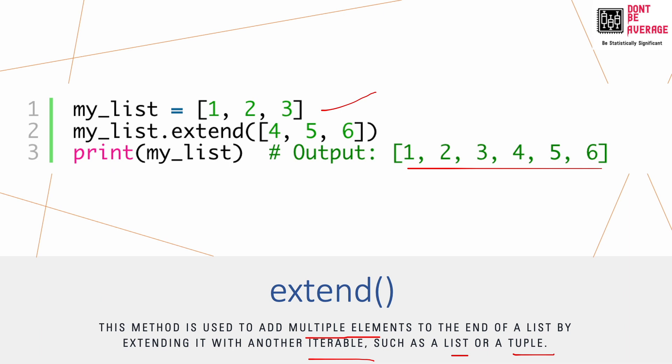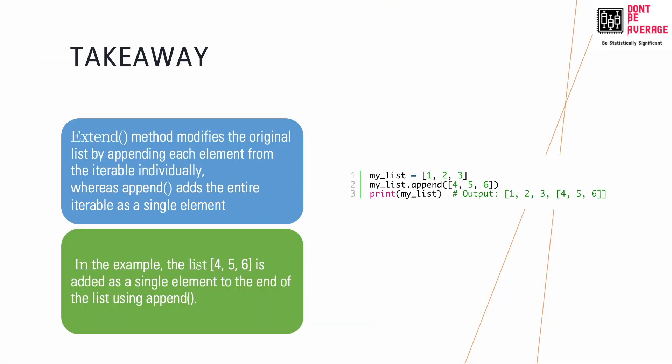The main takeaway is: the extend method modifies the original list by appending each element from the iterable individually, whereas append adds the entire iterable as a single element.